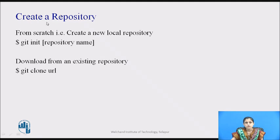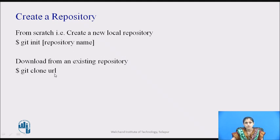First, you need to create a repository. Either you can create it from scratch using the git init command — git init then specify the repository name — or you can create a repository on GitHub and clone it using the command git clone followed by the URL.